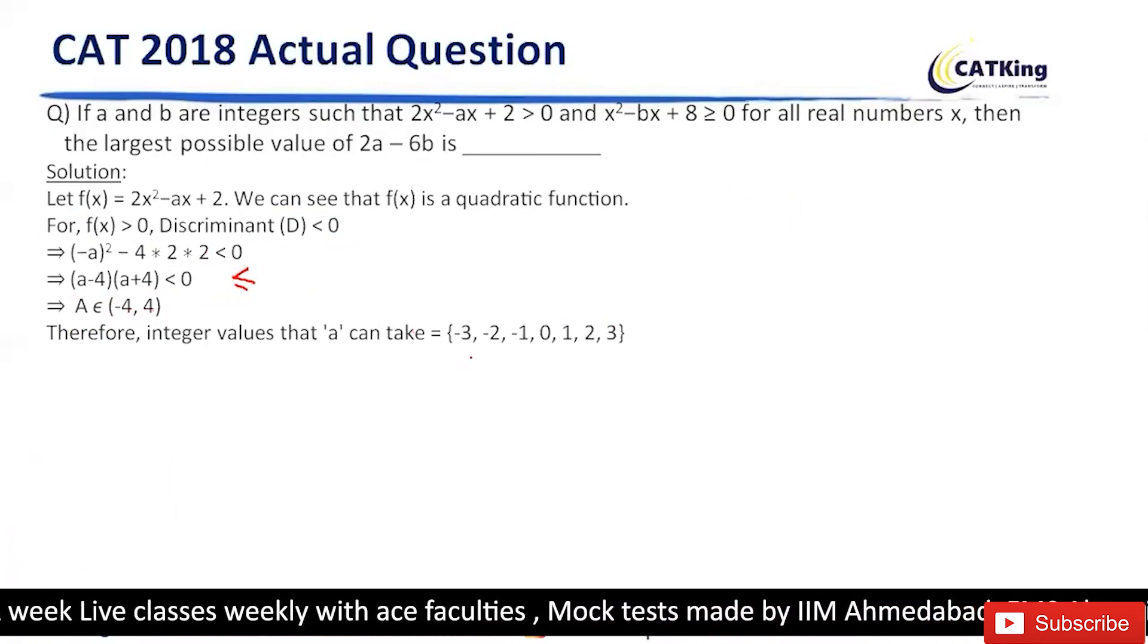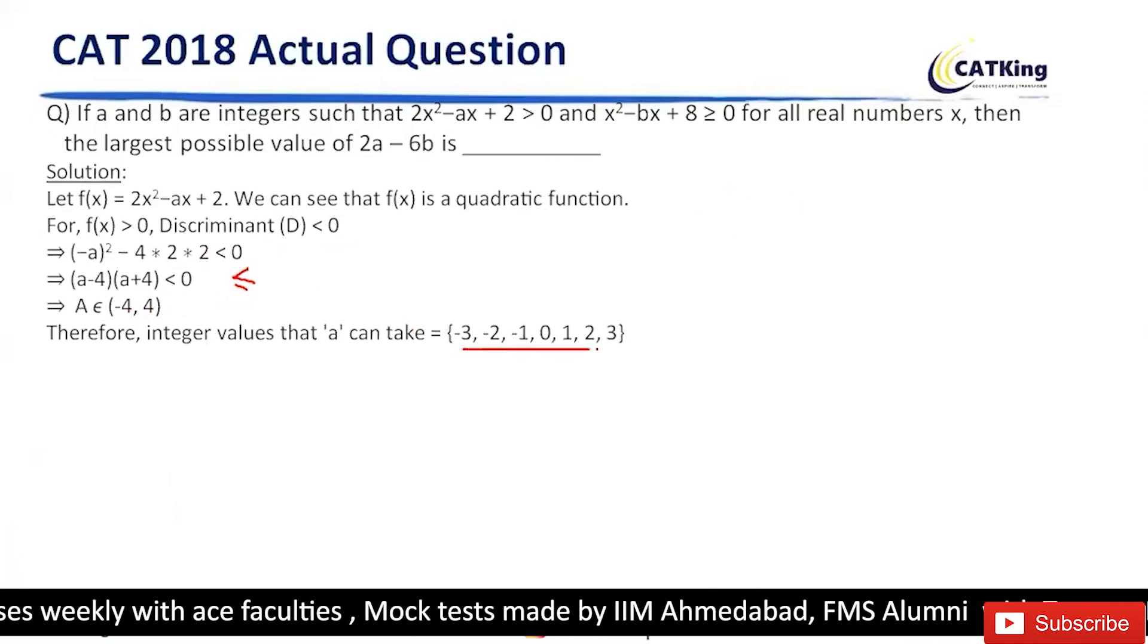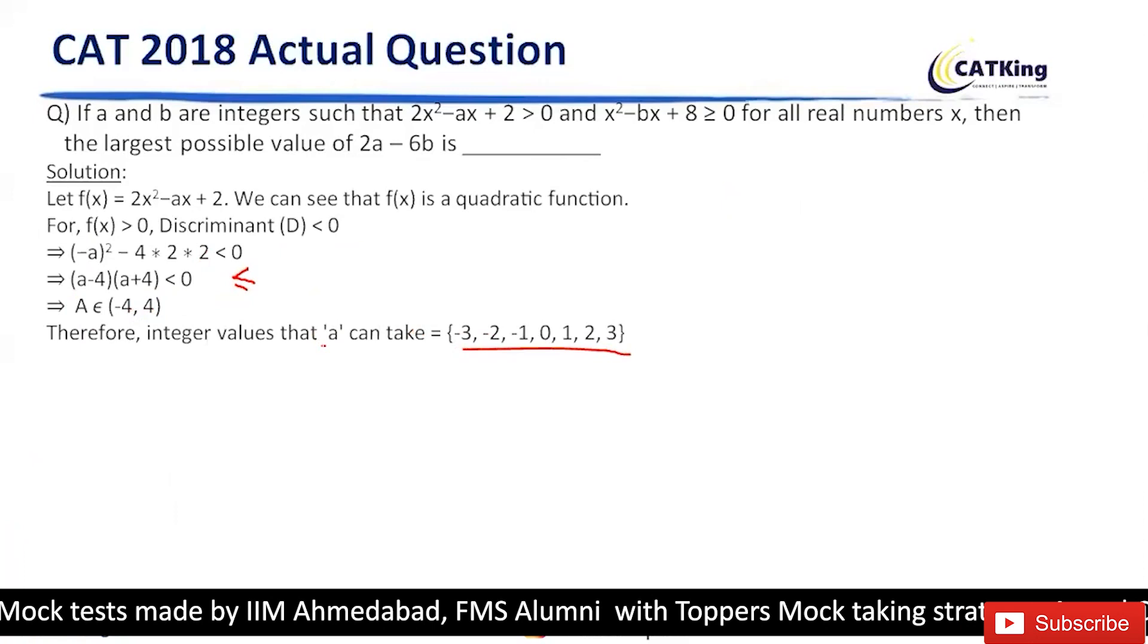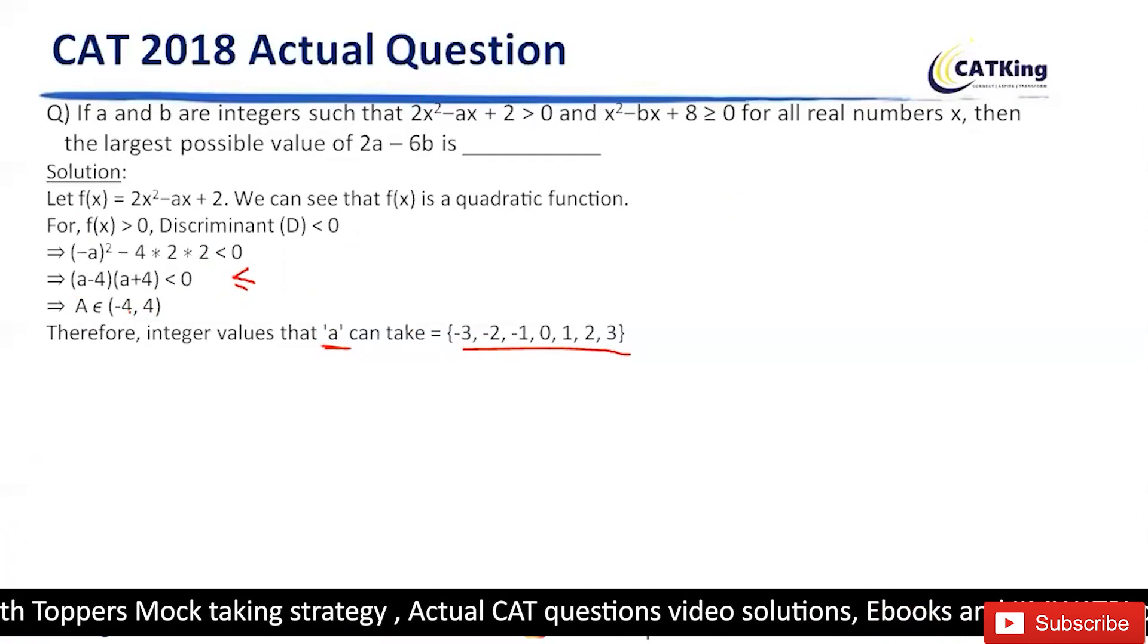So A's values can be possible - minus 4 cannot be possible. It will take -3, -2, -1, 0 till 3. Okay?